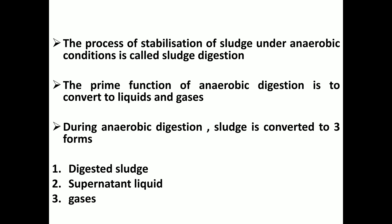Sludge digestion is a process of stabilization of sludge under anaerobic conditions. This process forms some gases, liquid, and treats organic matter. For anaerobic digestion, we get three products: Digested Sludge, Supernatant Liquid, and Gases.